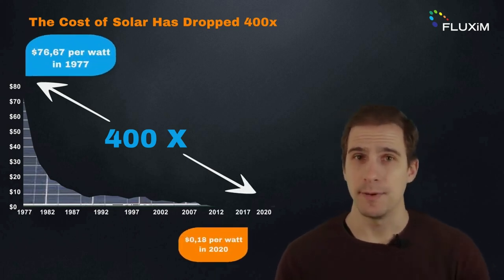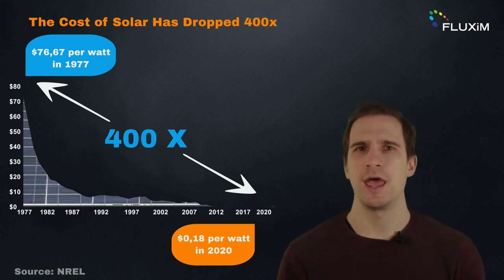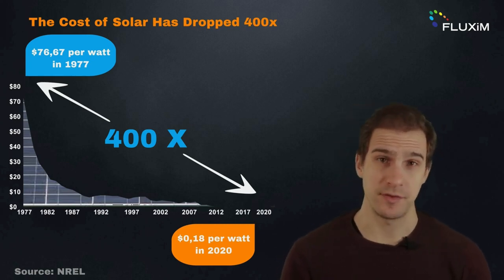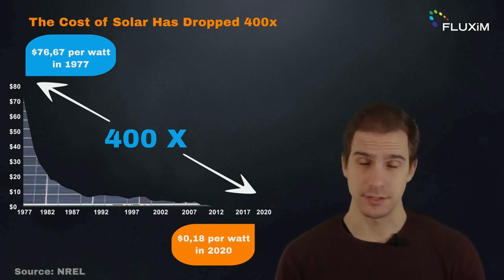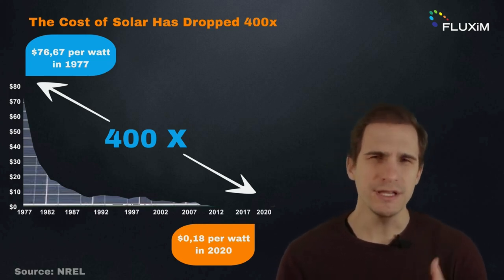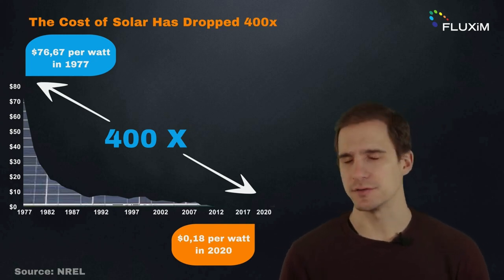However, the balance of system components like wiring, inverters, and mounting units tend to increase with the size of PV modules, making up about 55% of the total cost. So we need to increase the efficiency of the solar cell in order to push down the cost of solar energy.